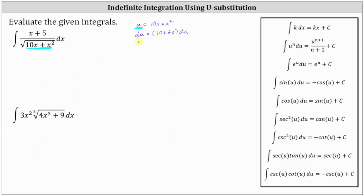Let's go ahead and factor out the two, which gives us du equal to two times — changing the order — if we factor two from x we have x, if we factor two from 10 we have five, giving us the quantity x plus five, and we still have times dx.